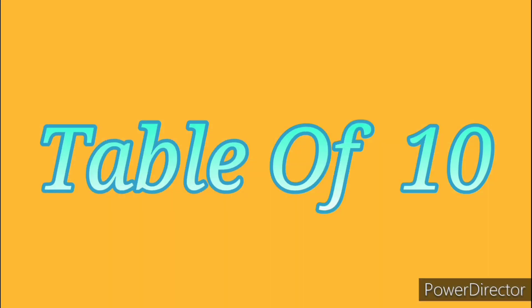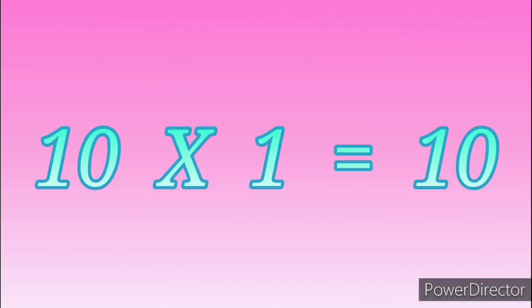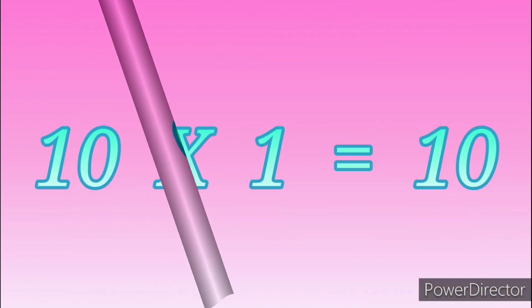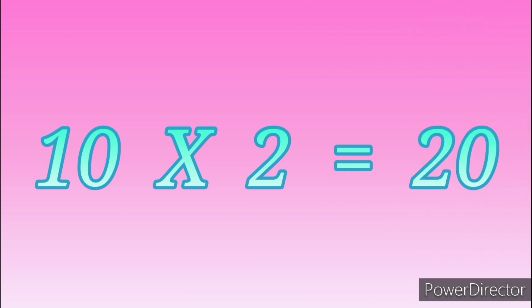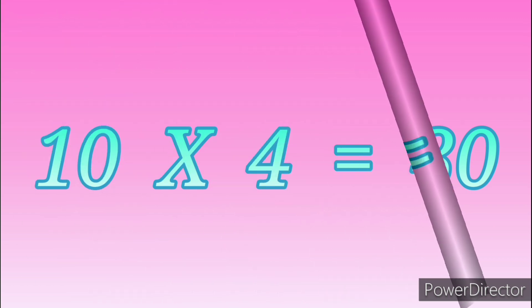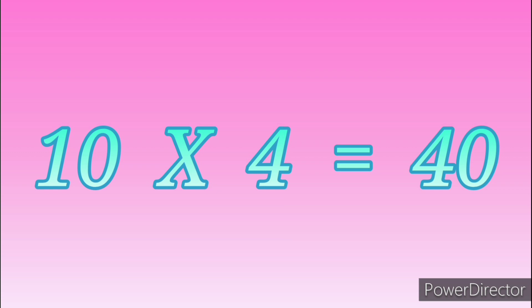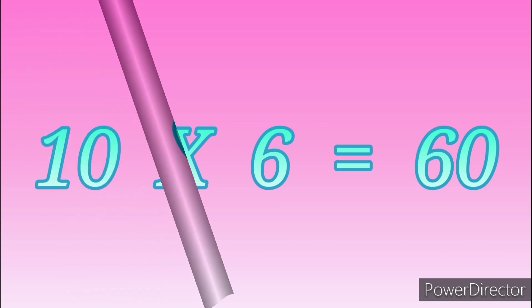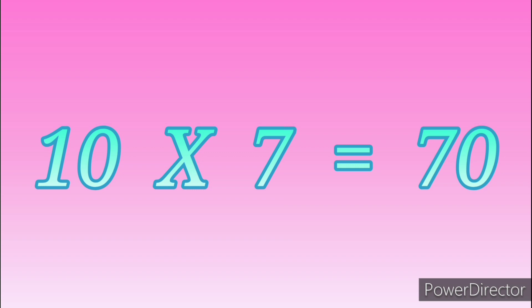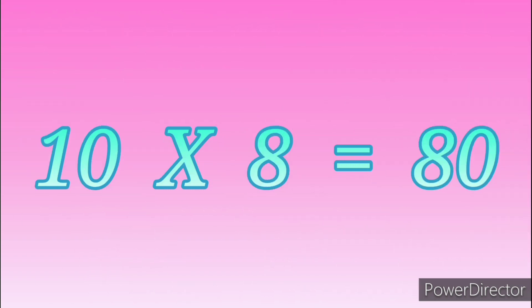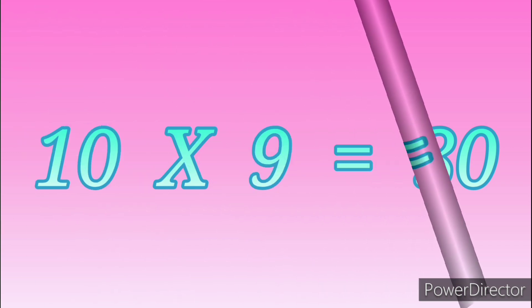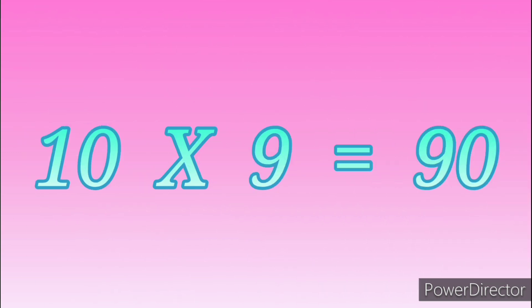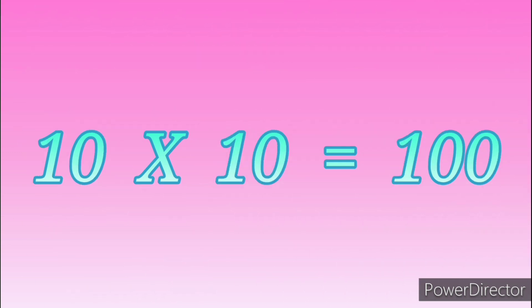Table of 10. 10 sixes are 60. 10 sevens are 70. 10 eights are 80. 10 nines are 90. 10 tens are 100.